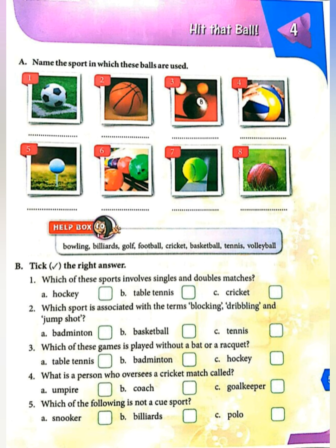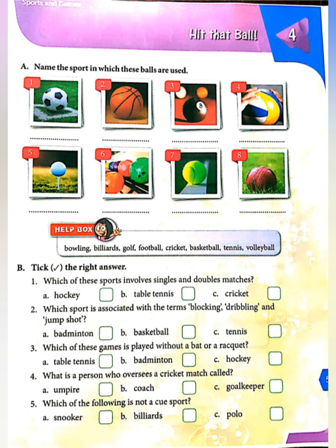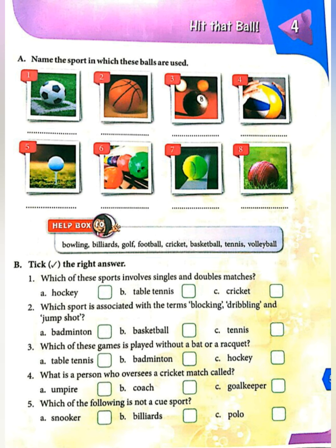Exercise B: Choose the right answer. Number 1: Which of these sports involves singles and doubles matches? Answer: Table Tennis. Number 2: Which sport is associated with the terms blocking, dribbling and jump shot? The answer is basketball. Number 3: Which of these games is played without a bat or a racket? Answer: Hockey. Number 4: What is a person who oversees a cricket match called? The answer is umpire. Number 5: Which of the following is not a court sport? The answer is polo.